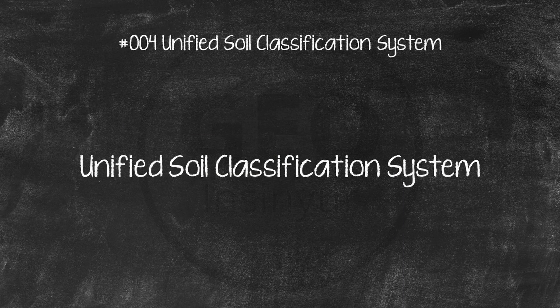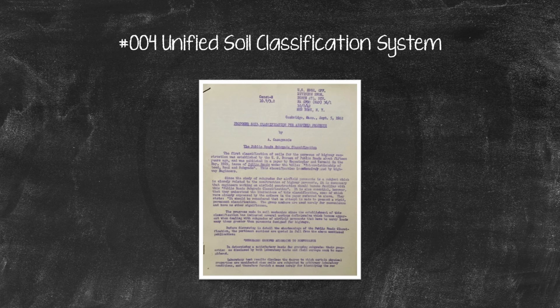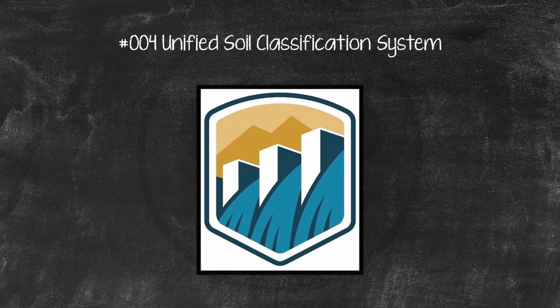The Unified Soil Classification System is a modified version of Casagrande's Airfield Classification (AC) system developed in 1942 for the Corps of Engineers. Since 1942, the original classification has been expanded and revised in cooperation with the Bureau of Reclamation so that it applies not only to airfields, but also to embankments, foundations, and other engineering features. This system was adopted in 1952.